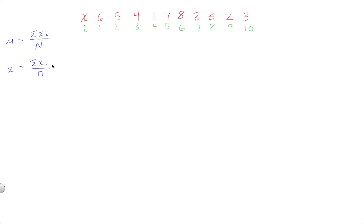Let's calculate the sample mean. We'll take care of the numerator first since the denominator is easy. Sigma xi literally means take the sum of each x value, x₁ through x₁₀. That's 6 + 5 + 4 + 1 + 7 + 8 + 3 + 3 + 2 + 3, which equals 42. So our numerator is 42.